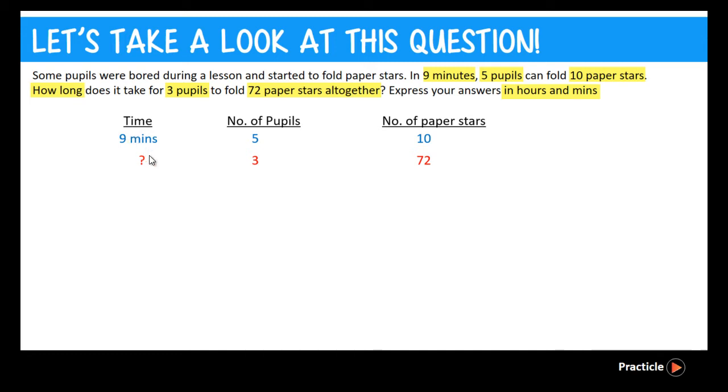So before we start to solve the question, we first need to understand the basic relationship between the 3 quantities. Time, pupils and paper stars.